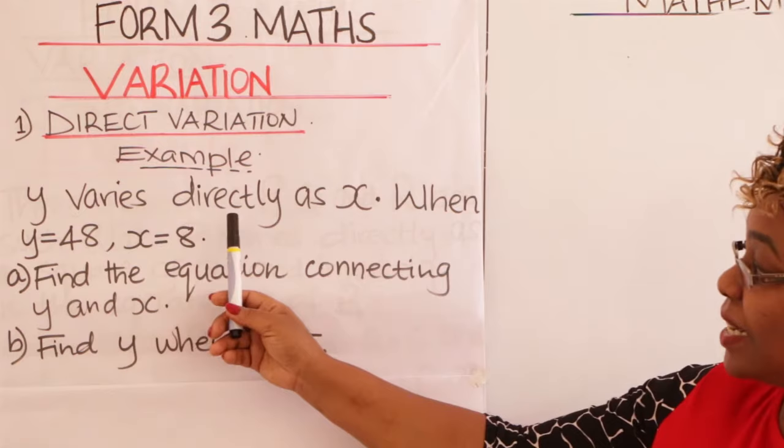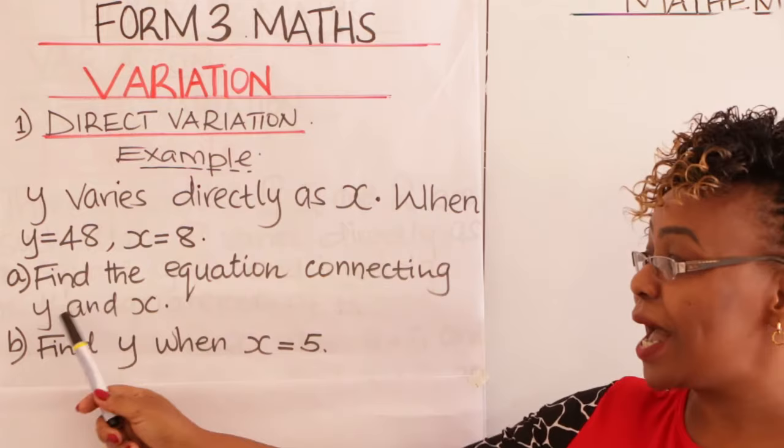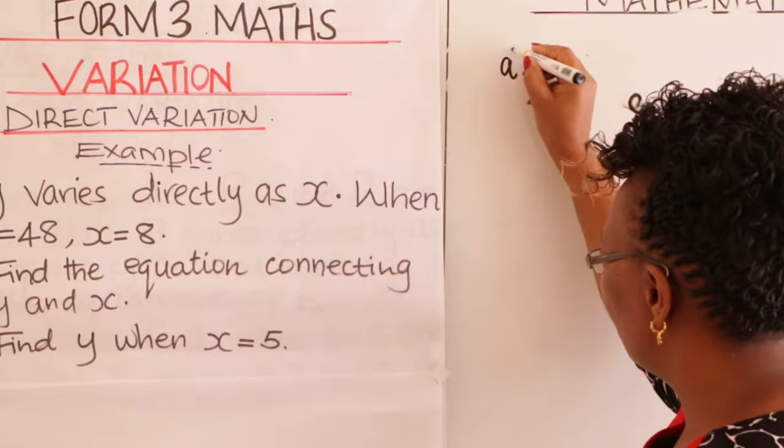The first example here: Y varies directly as X. When Y is 48, X is 8. Question A: find the equation connecting Y and X. Question B: find Y when X is 5. So how do you go about that?